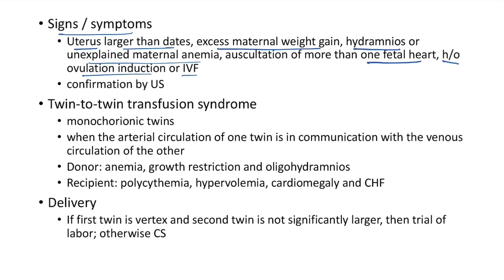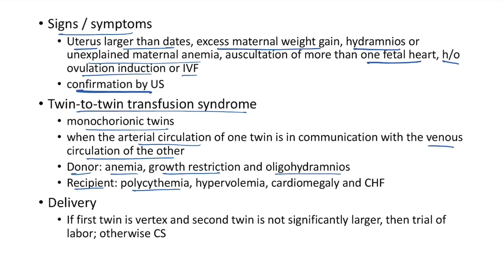Multiple gestation should be confirmed by ultrasound. Twin-to-twin transfusion syndrome (TTTS) is a major complication of monochorionic twins, occurring when arterial circulation of one twin communicates with venous circulation of the other. Donor twin: anemia, growth restriction, and oligohydramnios. Recipient twin: polycythemia, hypervolemia, cardiomegaly, and congestive heart failure. Delivery: if first twin is vertex and second is not significantly larger, trial of labor can be done; otherwise cesarean section.